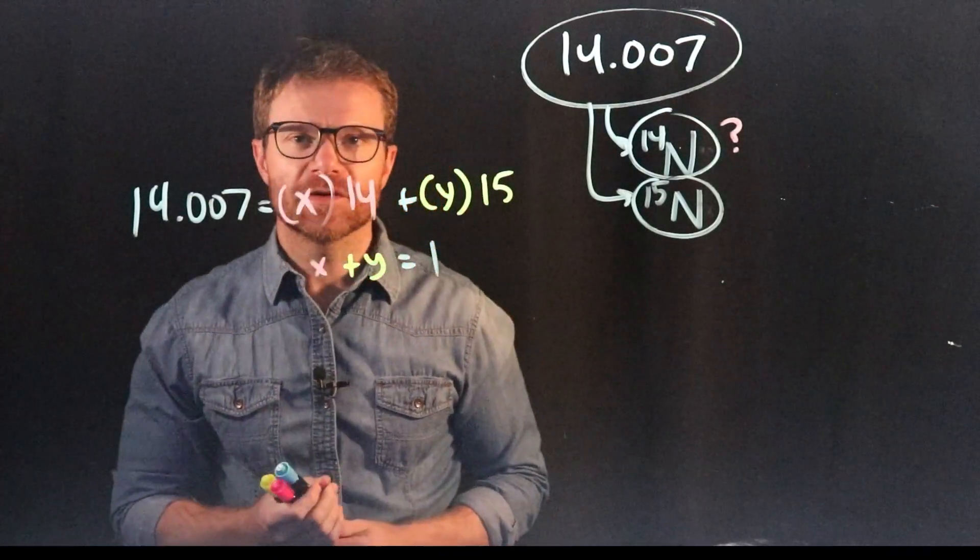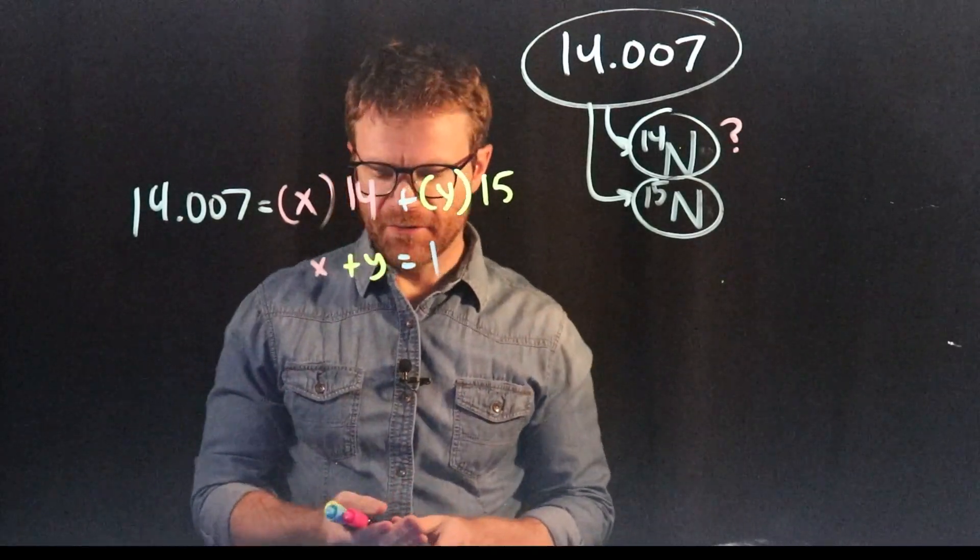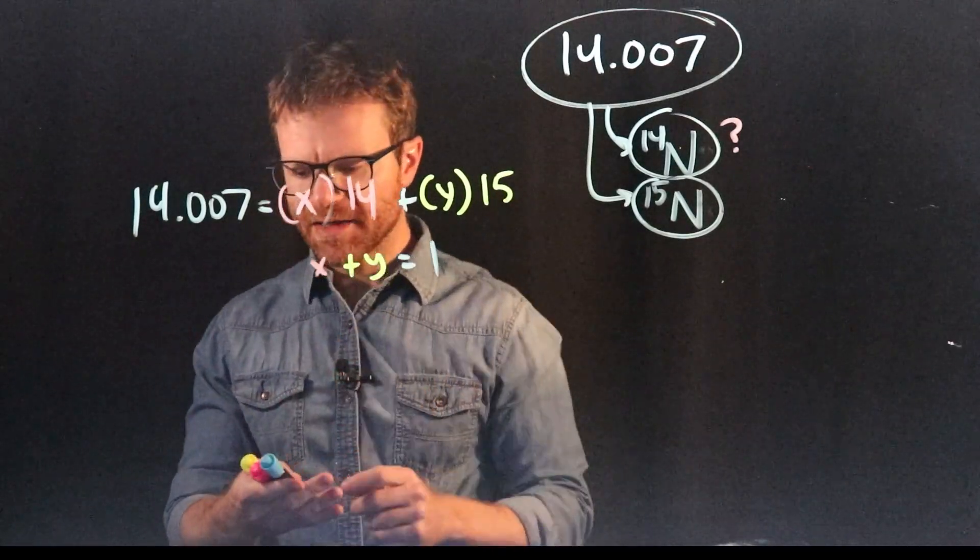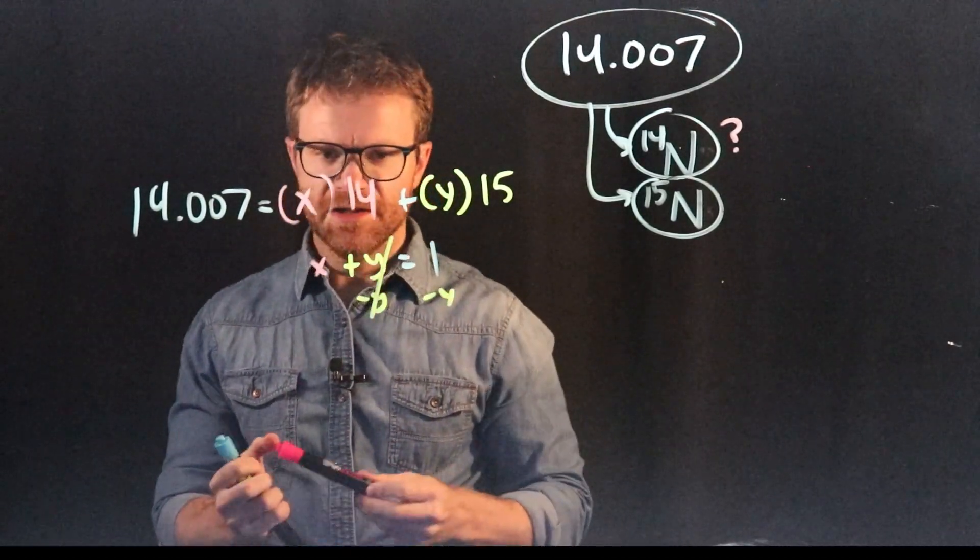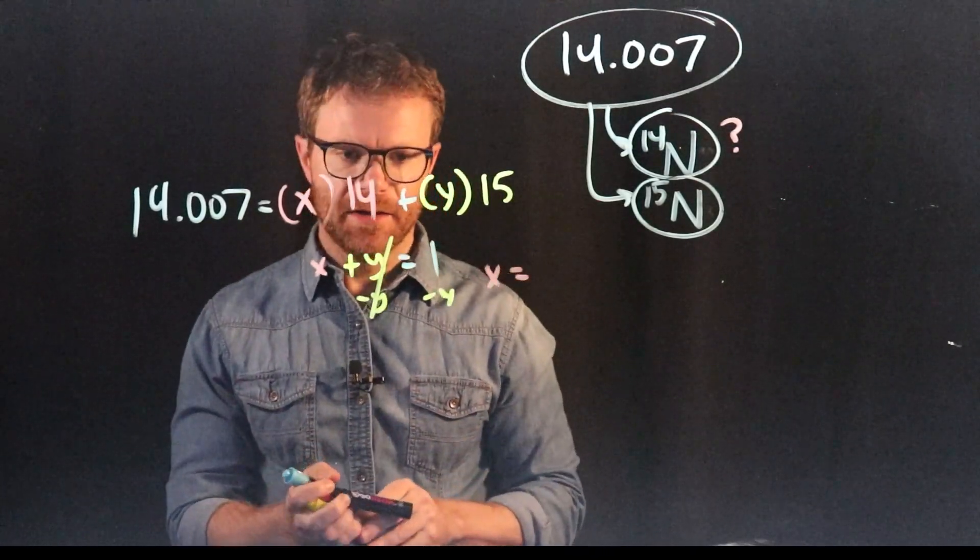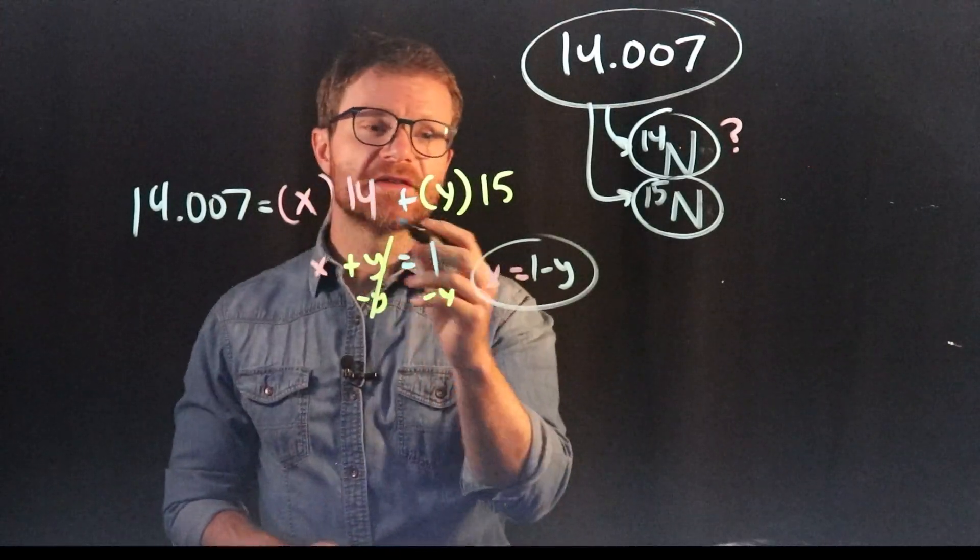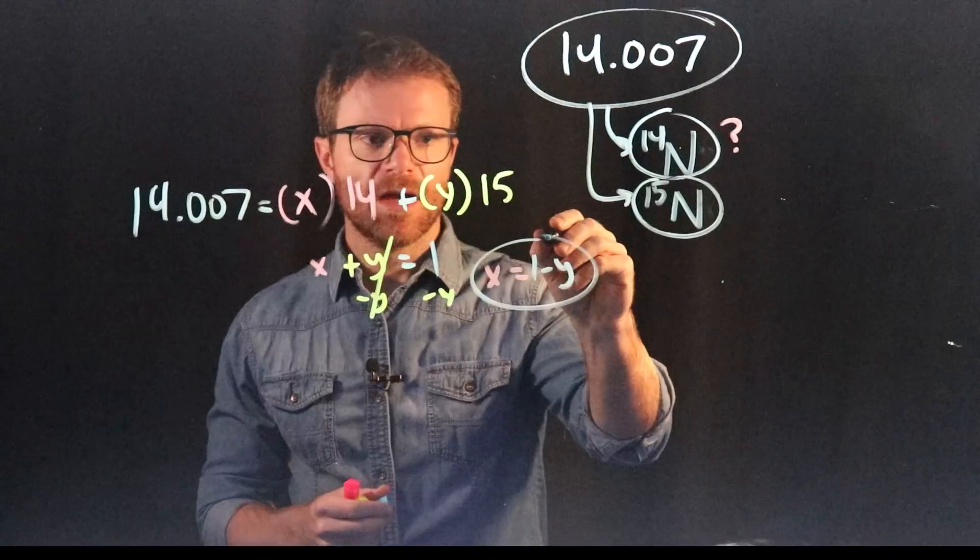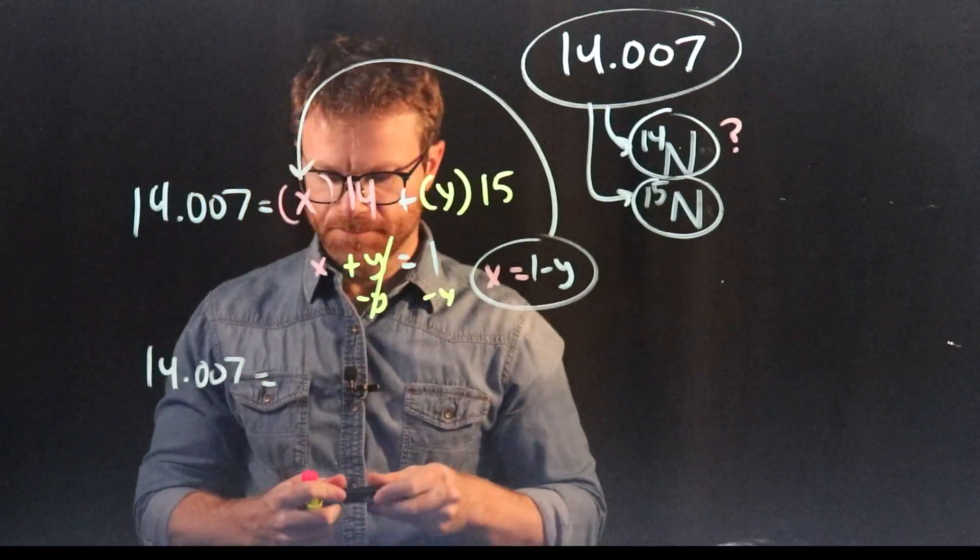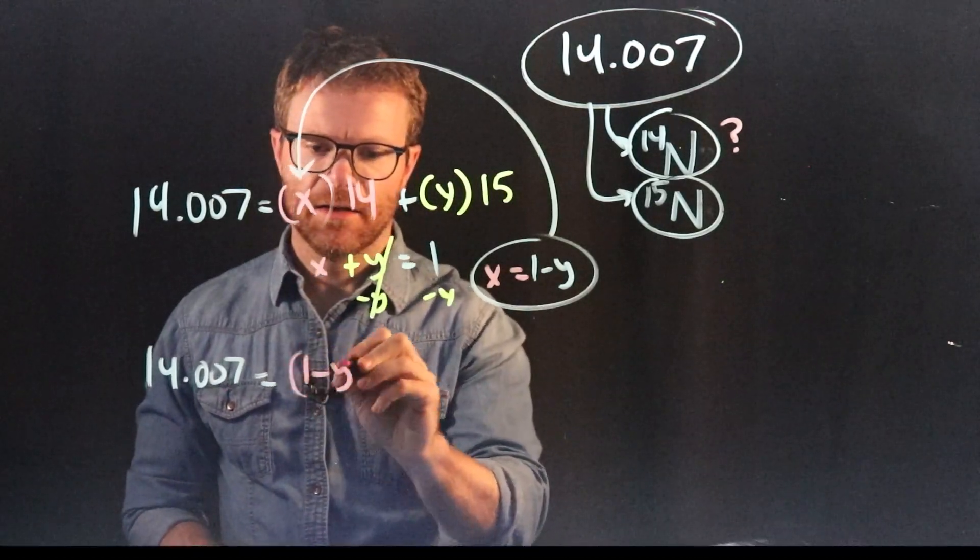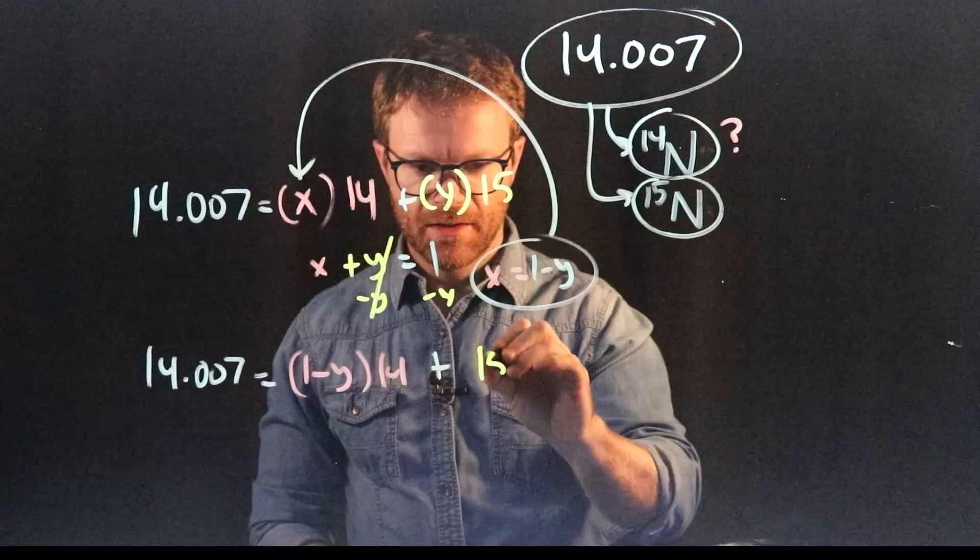Now that we know X plus Y equals 1, we can eliminate one of these variables. Because we can't solve an algebraic equation with multiple variables. But if we just had X's or just Y's, we could in fact solve that variable, right? So the way I would do this, if I wanted to get X by itself, is I would subtract Y from both sides of the equation, these would cancel, and I would get X equals 1 minus Y. And so now that I know what X is, I could replace any X's I see with 1 minus Y. So let's rewrite this, plugging the value of X into that X right there. So I have 14.007 equals 1 minus Y times 14 plus Y times 15. Or we could just call that 15Y.